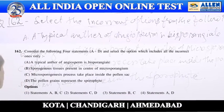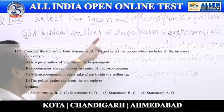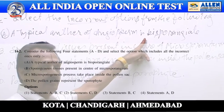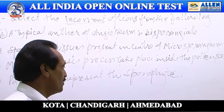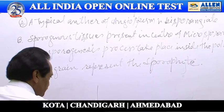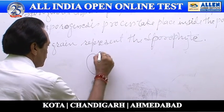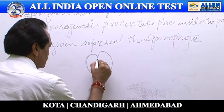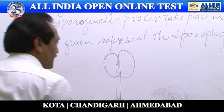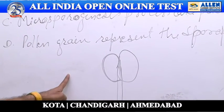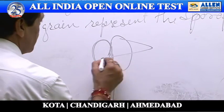First, we check statement A: a typical anther of angiosperm is bisporangia. This statement is totally wrong because in a typical anther of angiosperm, two anther lobes are present.